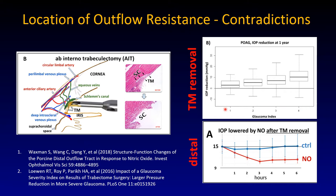When you remove the trabecular meshwork, you can see that in advanced glaucoma — here grade 4, a grading scale that accounts for preoperative pressure, visual field, and number of medications — there is a bigger pressure drop from TM removal compared to just ocular hypertension. Those patients get a lesser drop. This suggests that the worse the glaucoma, the higher the outflow resistance at the level of the trabecular meshwork, and therefore the bigger the pressure drop from removing it.